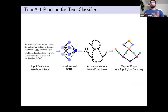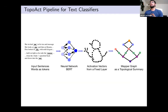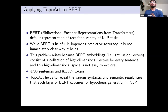For text classifiers, specifically BERT, we use a dataset of input sentences from the Universal Dependencies English corpus. Each input word is passed through BERT to get its activation vector. We then take those activation vectors from a particular layer and create a mapper graph as a topological summary. TopoVAC loads that data into an interactive visual tool where you can click on nodes and inspect which words are there, their part-of-speech tags, and so on.